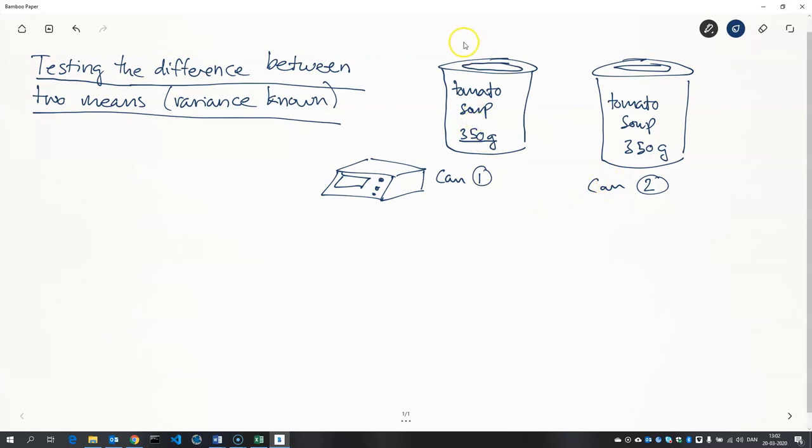Maybe these two cans come from different factories or production lines. Let's just imagine this is from Zealand and this is from Jutland, and we want to make sure that these cans weigh the same.